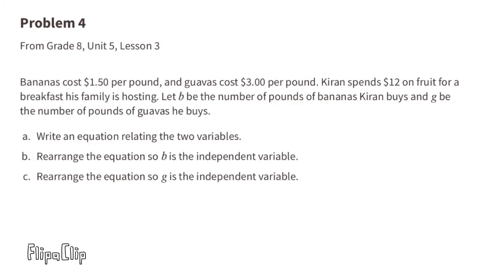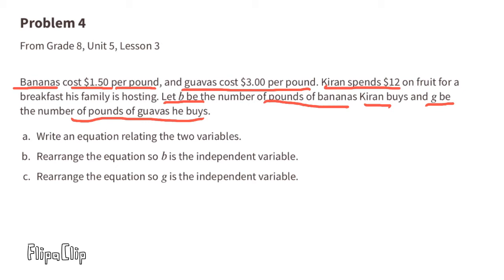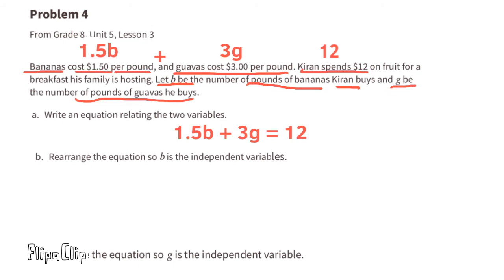Problem number 4, from 8th grade, Unit 5, Lesson 3. Bananas cost $1.50 per pound and guavas cost $3 per pound. Kieran spends $12 on fruit. Let B be the number of pounds of bananas and G be the number of pounds of guavas. Write an equation relating the two variables. Since bananas cost $1.50 per pound we use 1.5B, and since guavas cost $3 a pound we use 3G. The equation reads: 1.5B plus 3G equals 12.